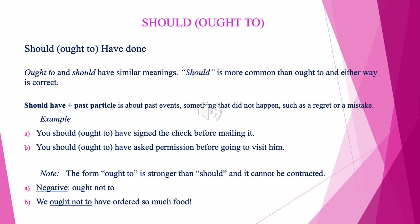Should, ought to, or have done / ought to have done — they have similar meanings. Should is more common than ought to, and either way is correct. Should have plus the past participle is about past events, something that did not happen, such as a regret or a mistake. For example: You should have signed the check before mailing it, or you ought to have signed the check before mailing it. You should have asked permission before going to visit him. Note that ought to is stronger than should and cannot be contracted.